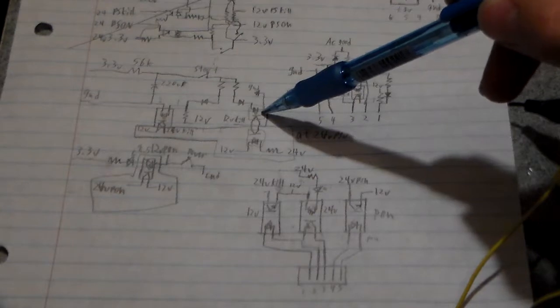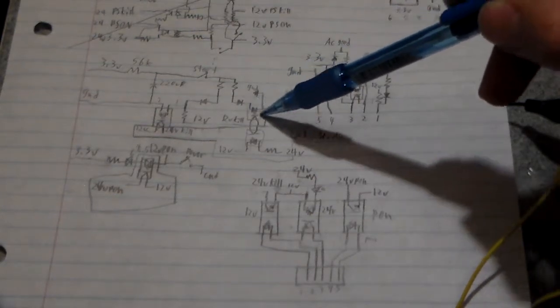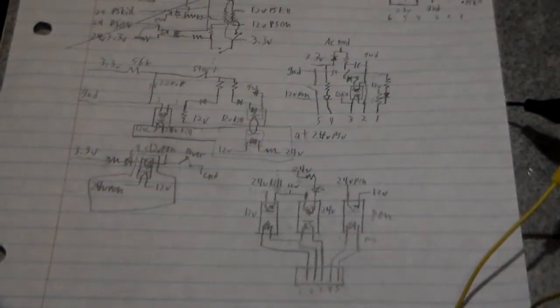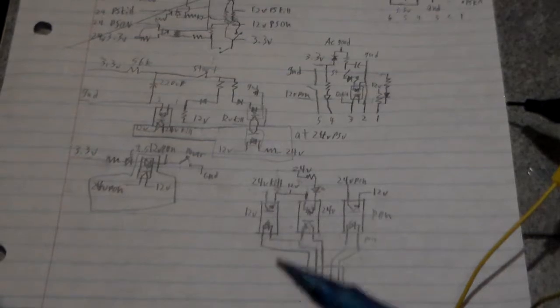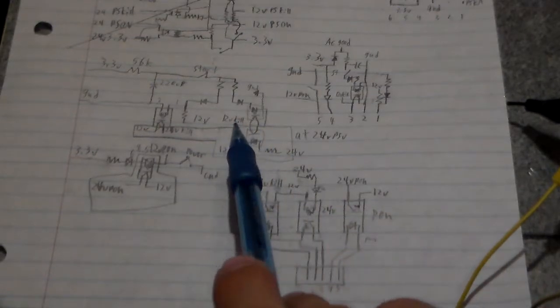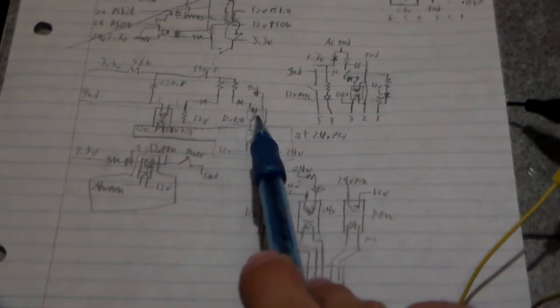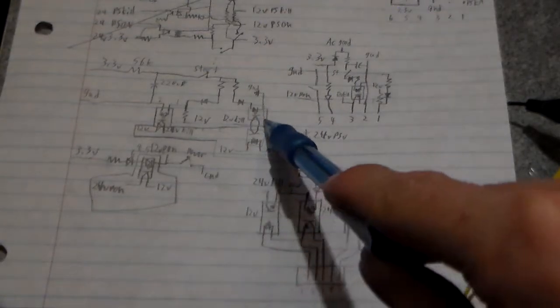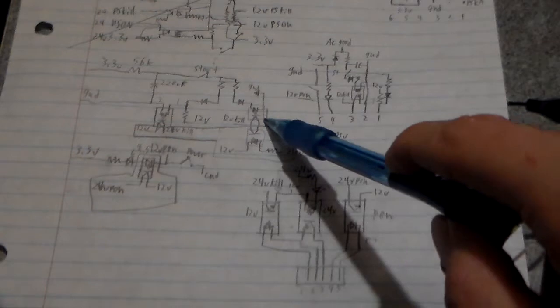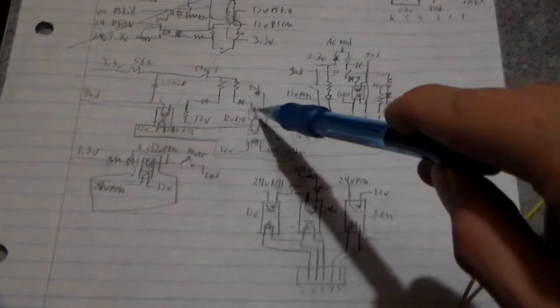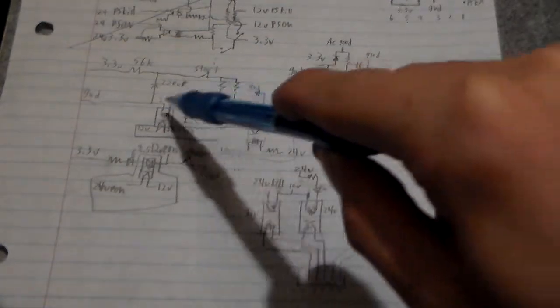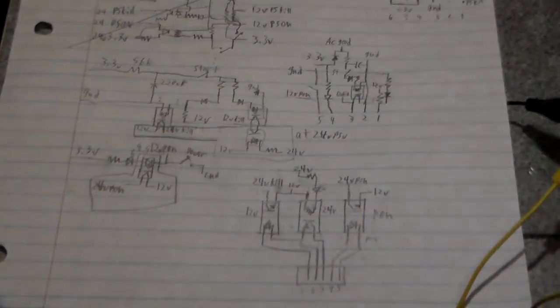This other optocoupler is going over here to its 12 volt kill, and that is for the 12 volt power supply. That is the power kill for the 12 volt one. And I know this optocoupler isn't necessary, however, it kind of is, because I'm not isolating it. I am just making them both respond the same way.